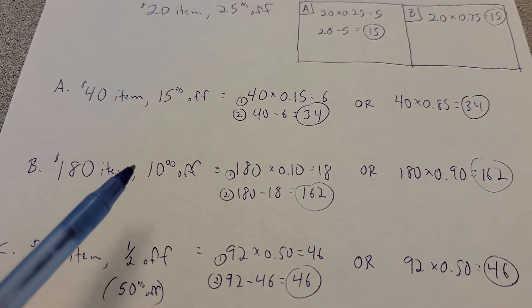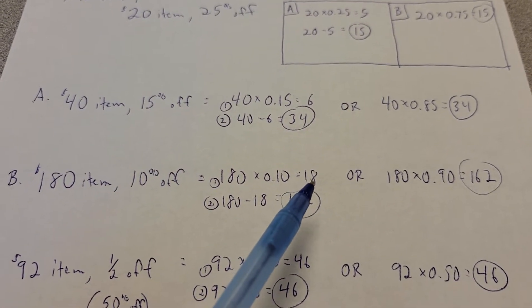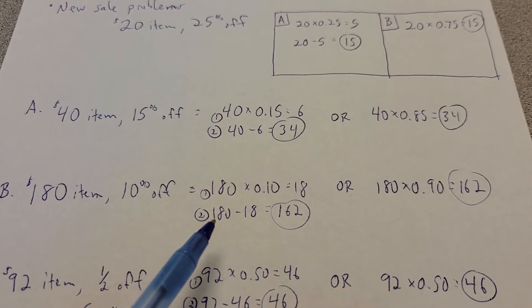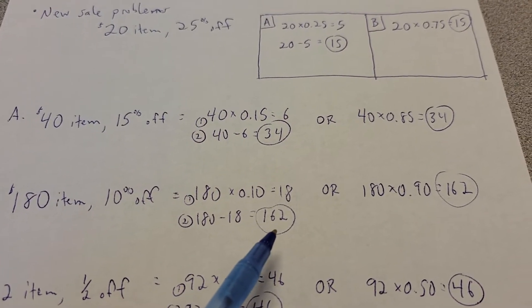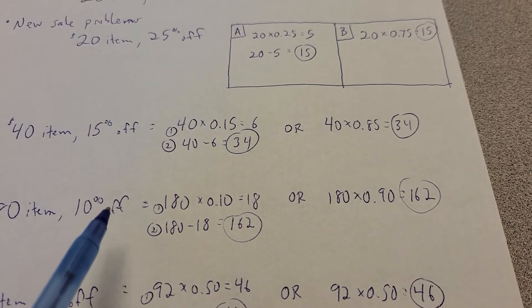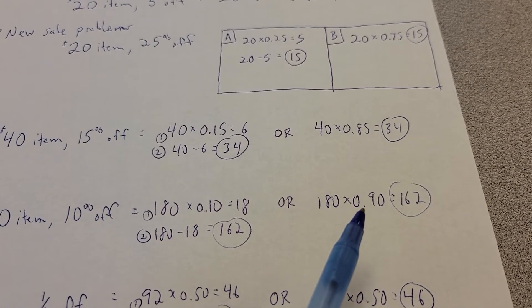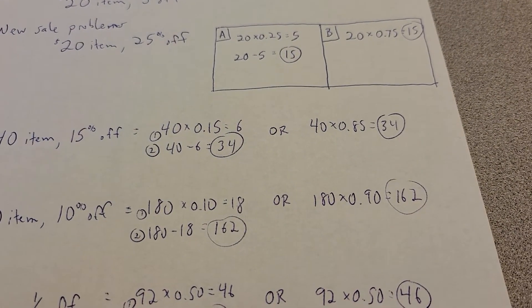If you have a $180 item, that's 10% off. You could take 180 times 0.10, and it gives you $18 came off the price. But now you've got to go back and say 180 minus 18 gives you $162 for the final price. Or if you said that 10% is off, that means there's 100 minus 10 means 90% is still left to pay. So 180 times 0.90 gives you $162.